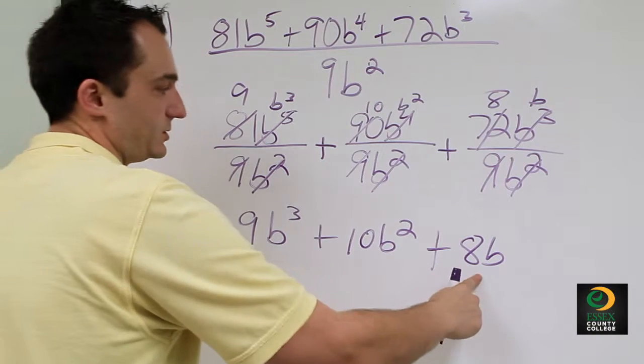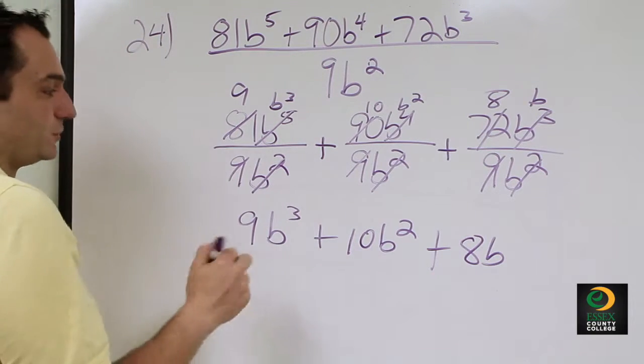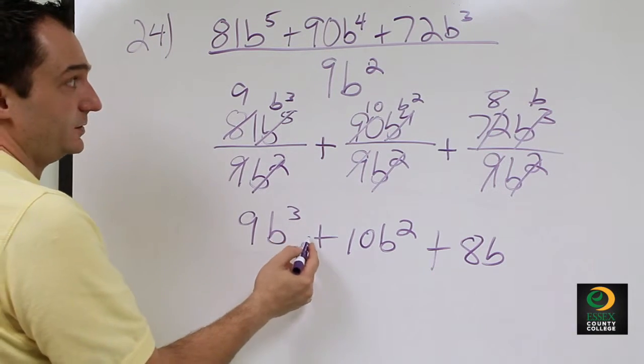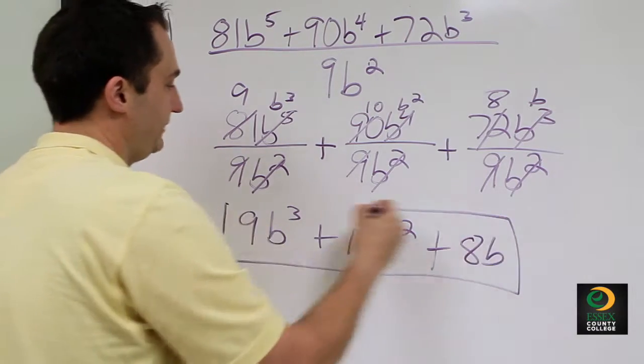None of these terms are like terms, so your final answer for number 24 is 9B³ + 10B² + 8B.